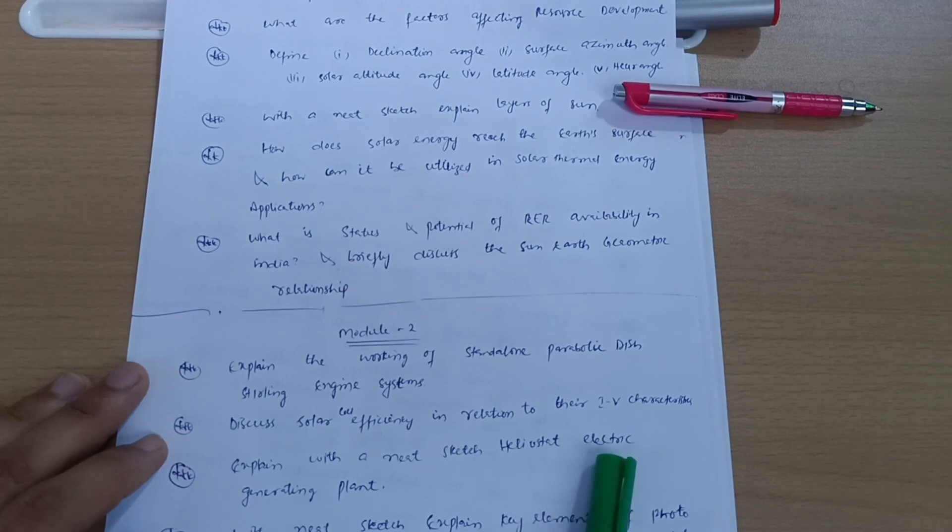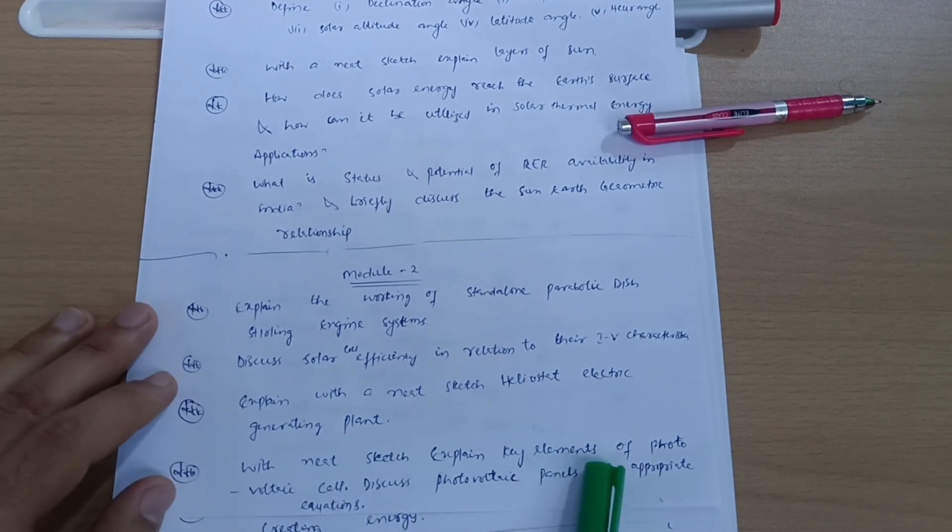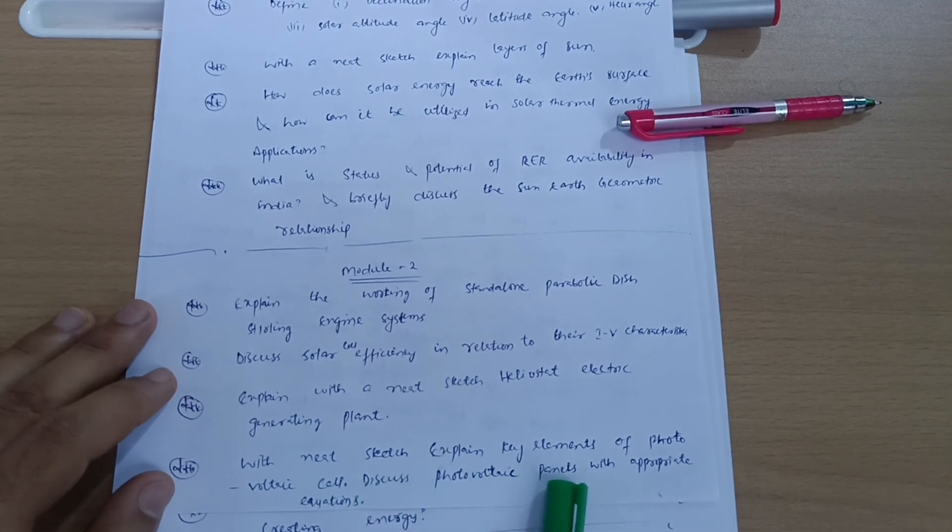Explain with a neat sketch heliostat electric generating plant. With a neat sketch, explain key elements of photovoltaic cell. Discuss photovoltaic panels with the appropriate equations.